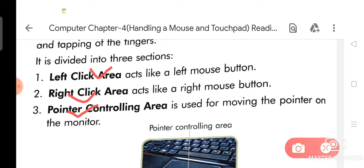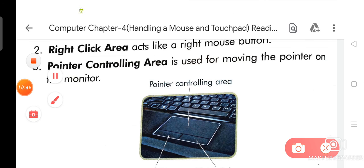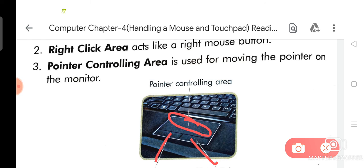Left click area acts like a left mouse button. Right click area acts like a right mouse button. Pointer controlling area is used for moving the pointer on the monitor. On the diagram, this one is the left click area, this one is the right click area, and this is the pointer controlling area.